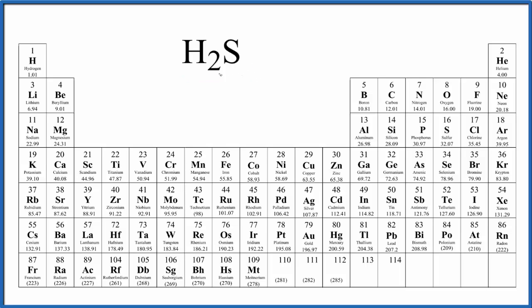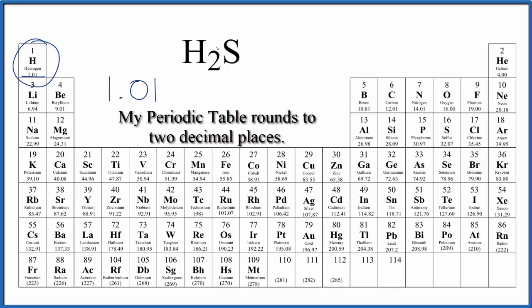If we look at H2S, we can first find hydrogen on the periodic table. That has an atomic mass of 1.01. So we'll write 1.01, and that's grams per mole. I won't write that each time. Let's write that at the end.